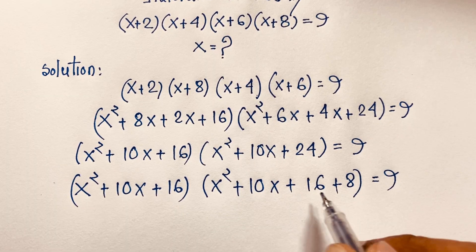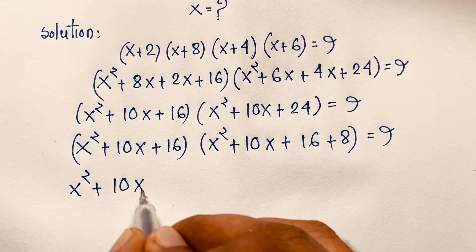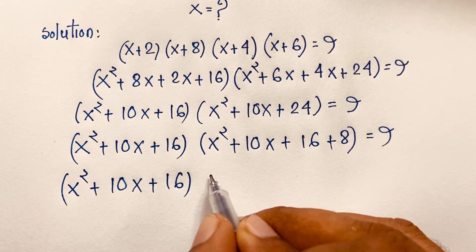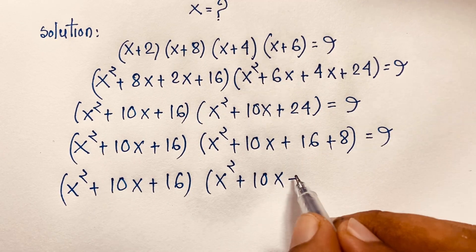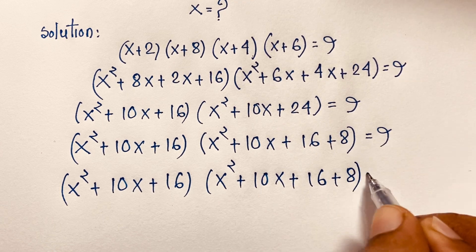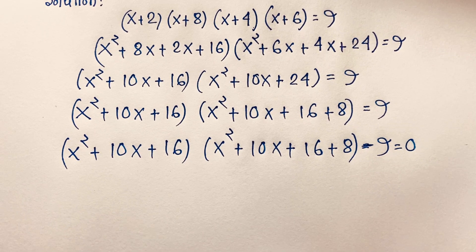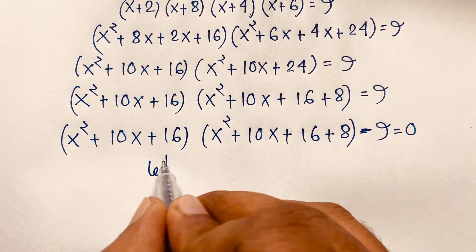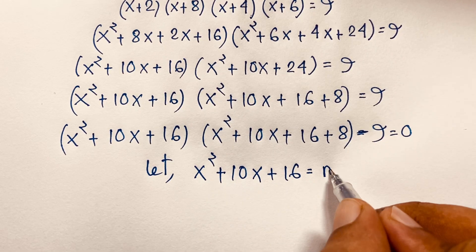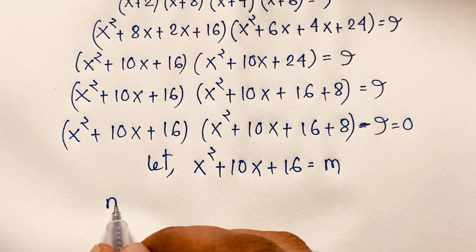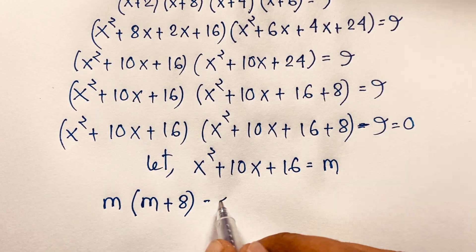So we have (x²+10x+16)(x²+10x+24) − 9 = 0. Let m = x²+10x+16. Then the expression becomes m times (m+8) minus 9 equals 0.